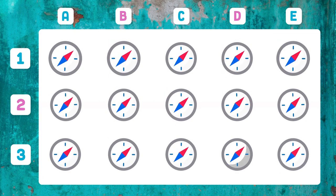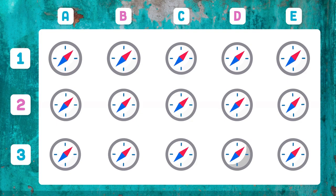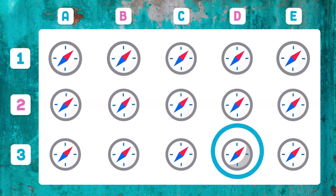Which compass is different from the rest? The compass that appears in 3D — it has more shade inside.